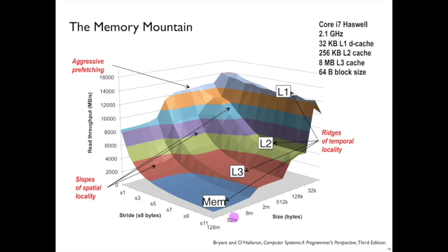On the right-hand side, the right-hand axis corresponds to the size of data that we're touching. So only looking at 32 kilobytes repeatedly, or all the way up to 128 megabytes in this picture.